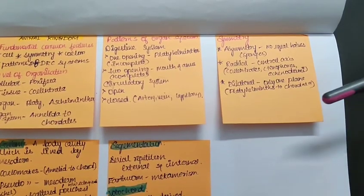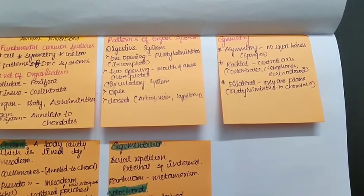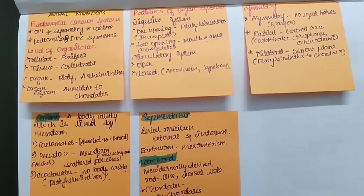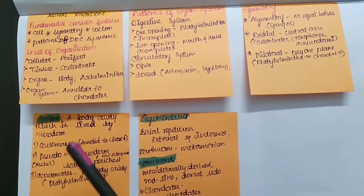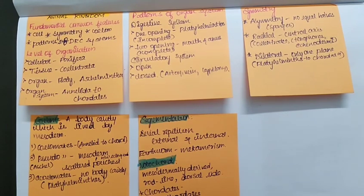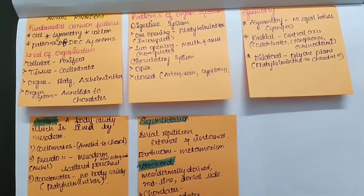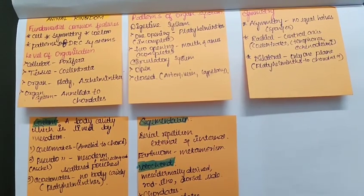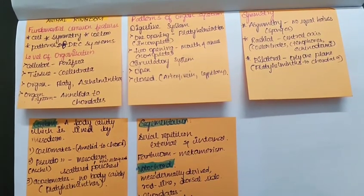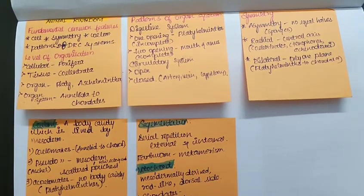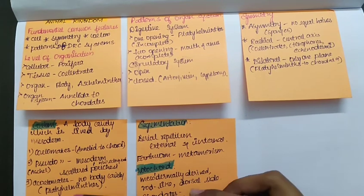Now talking about the coelom. First of all, what is coelom? Coelom is a body cavity which is lined by mesoderm that is present in guts of the animal. In this we have three types on the basis of coelom: one is coelomate, another is pseudocoelomate, and last one is acoelomate.